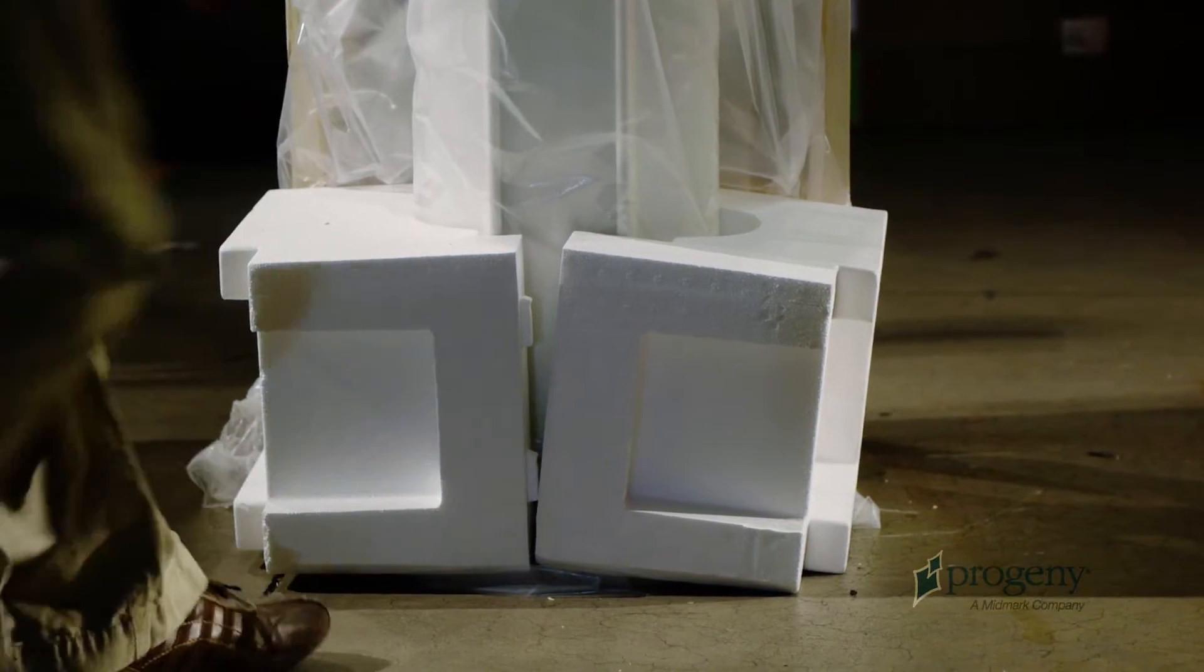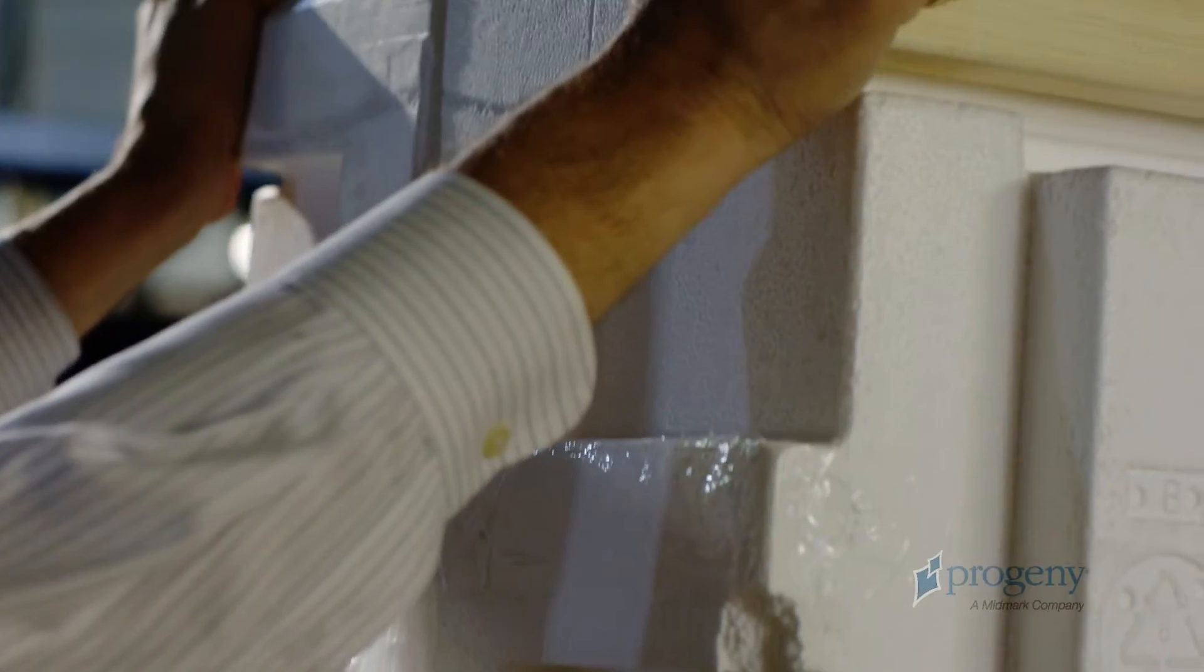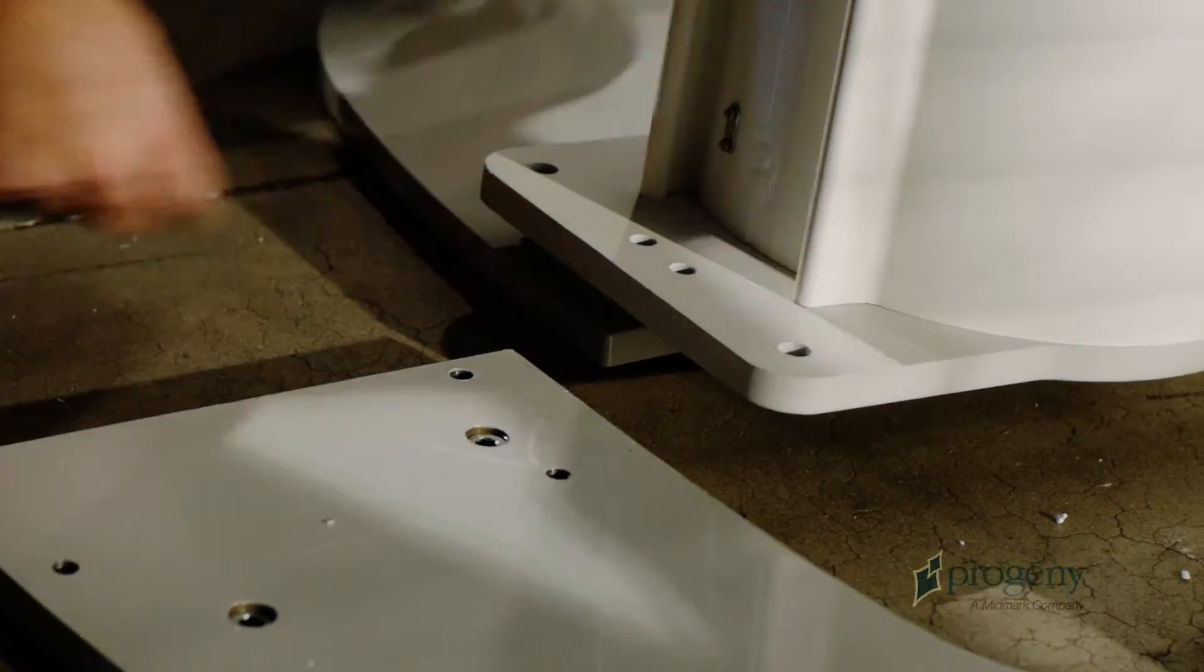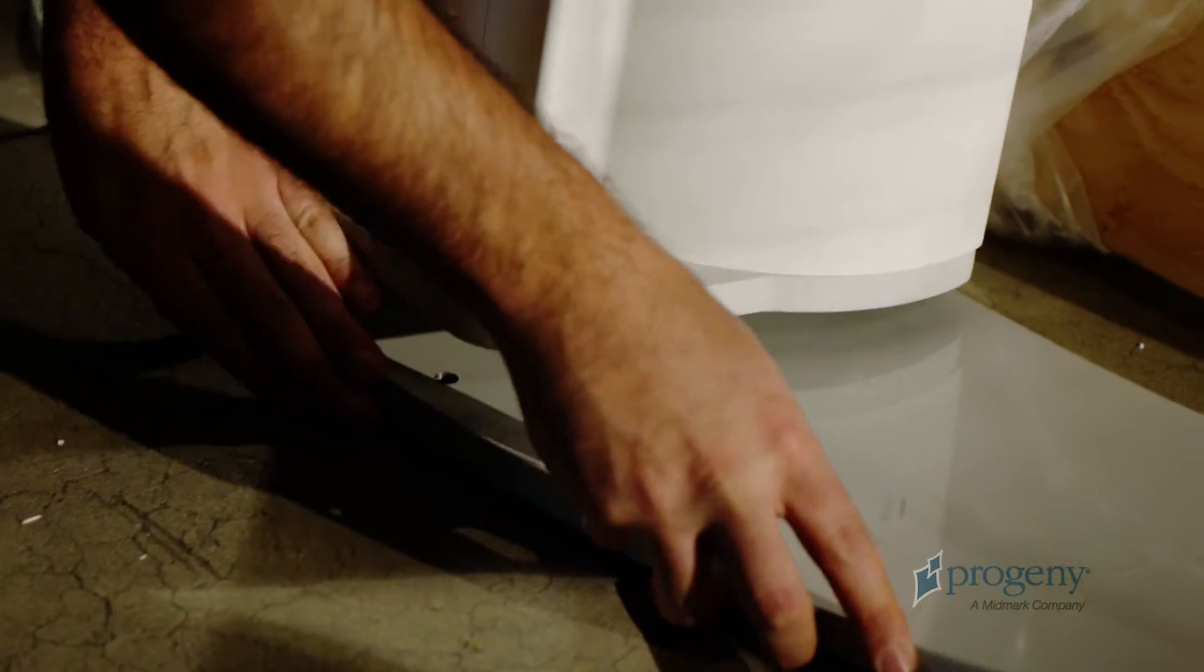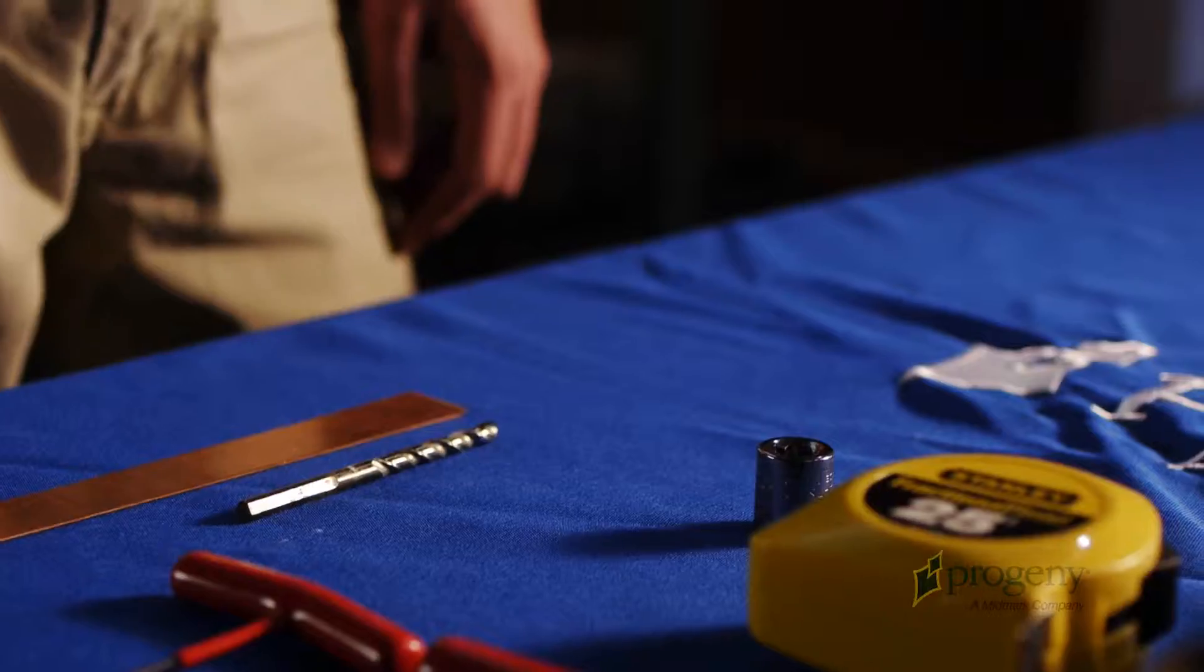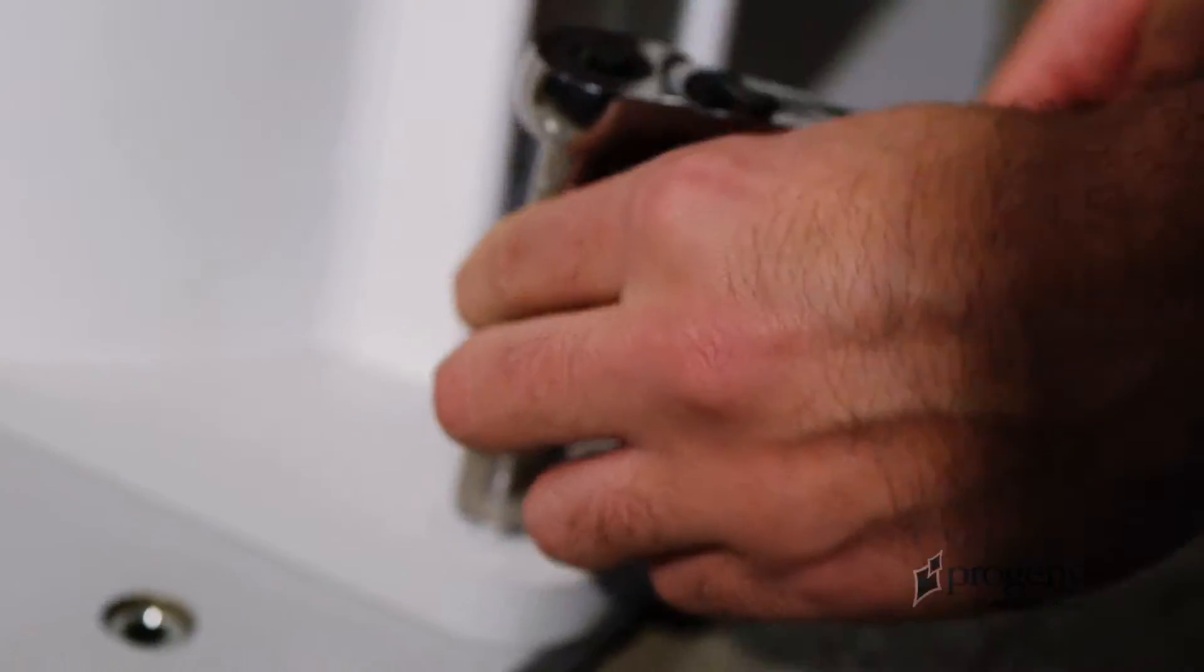If installing using the freestanding base, first remove the packing materials from the base of the column assembly. Carefully tilt the main column forward and slide the freestanding base components underneath. Once properly aligned, use a socket wrench to fasten the outer four bolts to secure the column to the base.